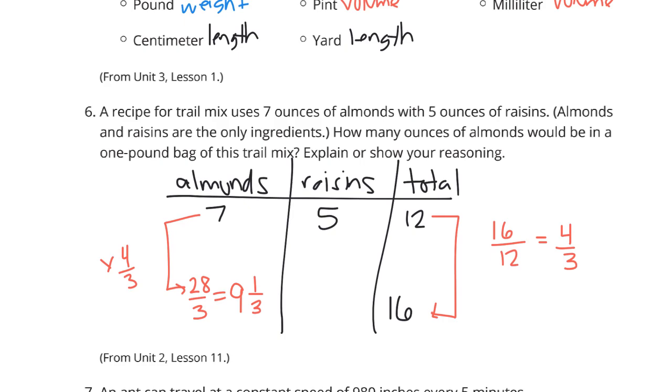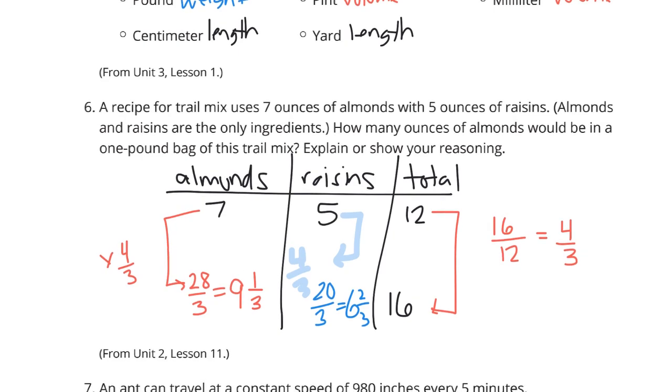Now, didn't ask for raisins, but if you were to multiply that by 4 thirds, you would actually get 20 thirds, which is 6 and 2 thirds. And when you add 6 and 2 thirds with the 9 and 1 third, you do end up with 16 ounces total. So, I know I said finally with 6, but no, finally on 7.